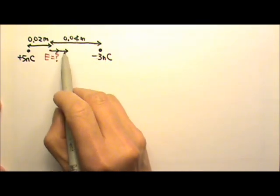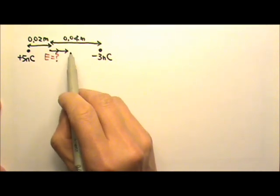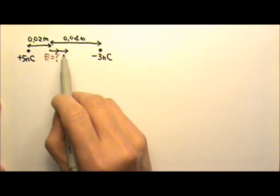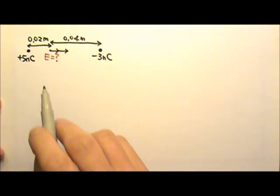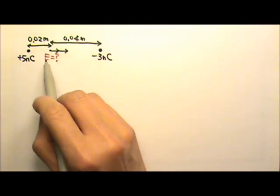So we just have to find the magnitude, and since they are in the same direction, we can add the two electric fields together and we'll have the net electric field at this location.